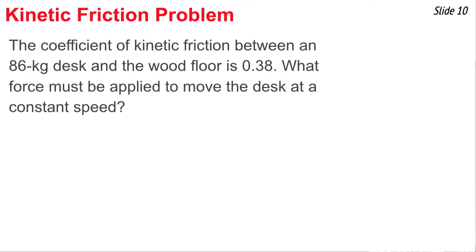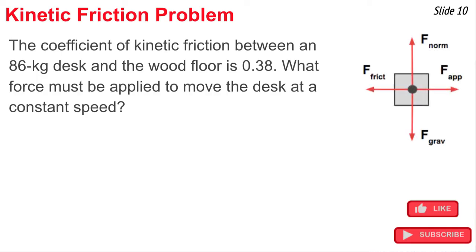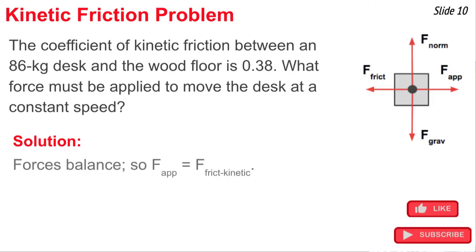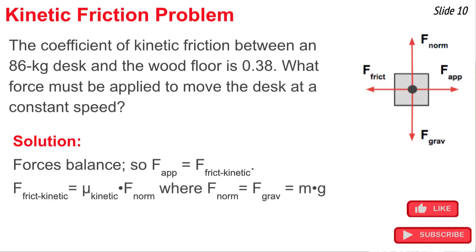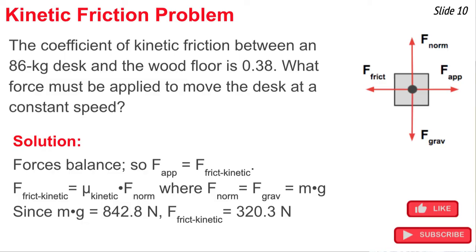Here's a kinetic friction problem. The coefficient of kinetic friction between an 86-kilogram desk and a wood floor is 0.38. What force must be applied to move the desk at constant speed? Constant speed implies balanced forces, so the applied force equals the kinetic friction force. Since F_friction = mu × F_norm = mu × mg, we get: F_friction = 0.38 × 842.8 N ≈ 320 N. That is the applied force needed to balance the friction force.